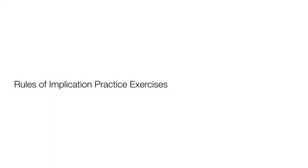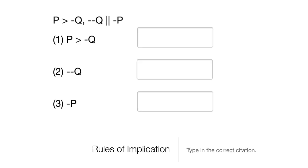Hello everyone, welcome to this chapter on the rules of implication. Let's take a look at some practice exercises. For some of these you'll fill in the citation, and for others you'll fill in the formula. A quick tip: the first citations are almost always going to be the premises given for the conclusion. The only exception is when we have a formula that's impossible to be false, but don't worry about that for right now.